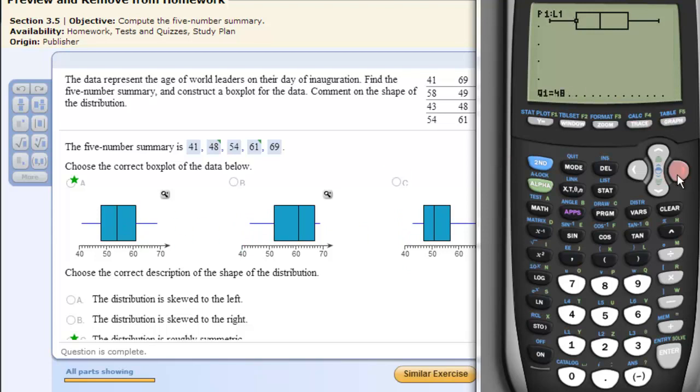And then 48 quartile 1, median 54, 61, and 69. And so that's the five number summary that creates the box plot.